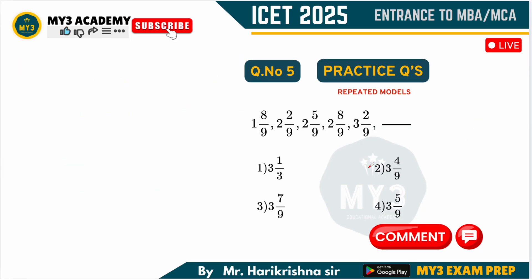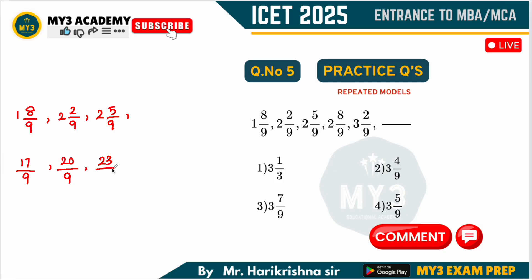In the next question, we have mixed fractions. As I told you, first convert the mixed fractions into fractions and then figure out the logic. The mixed fractions are: 1 8/9 = (9×1 + 8)/9 = 17/9. Next, 2 2/9 = (9×2 + 2)/9 = 20/9. Next, 2 5/9 = (9×2 + 3)/9 = 23/9. Next, 2 8/9 = (18 + 8)/9 = 26/9. Next, 3 2/9 = (27 + 2)/9 = 29/9.